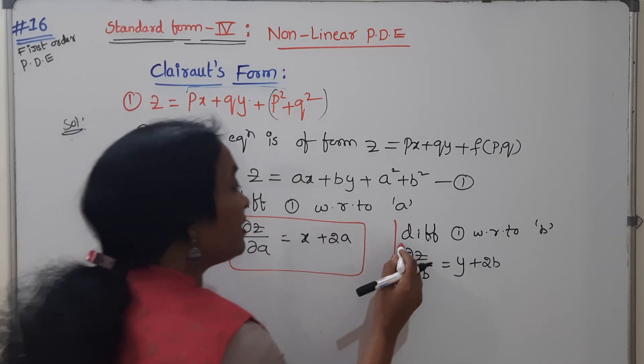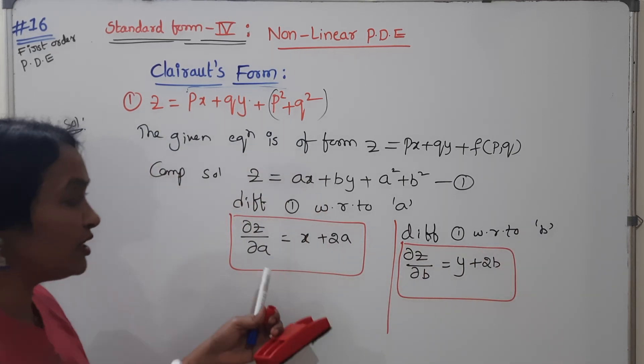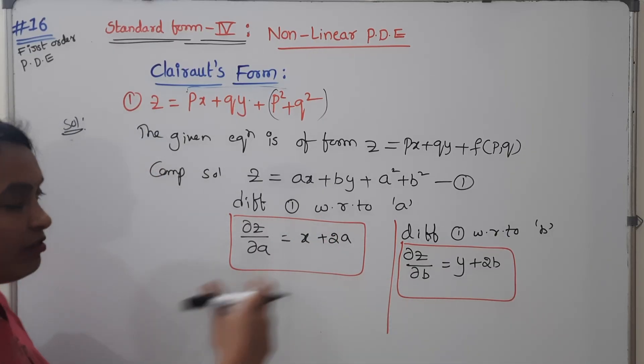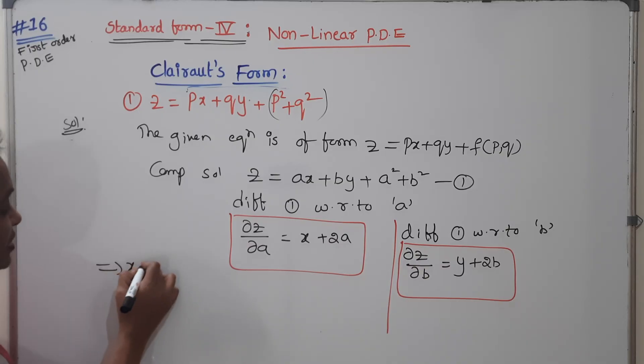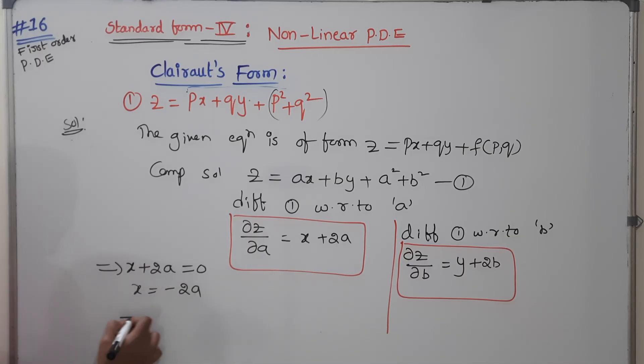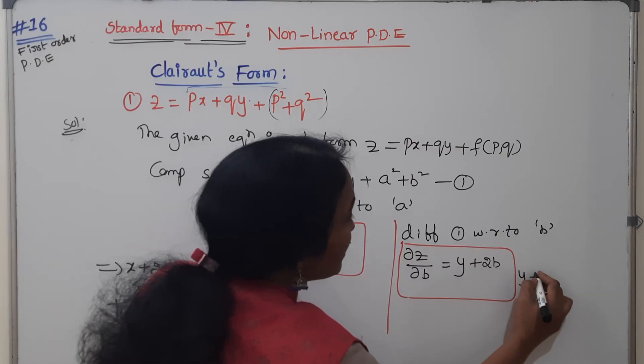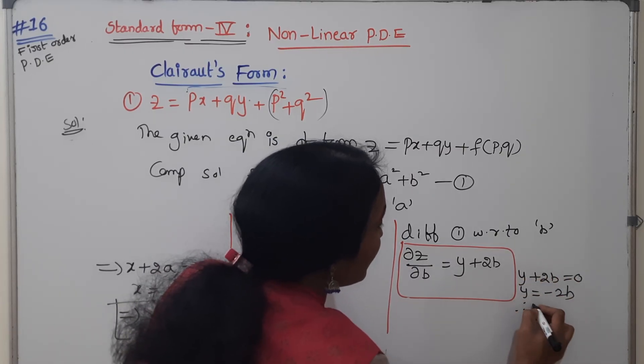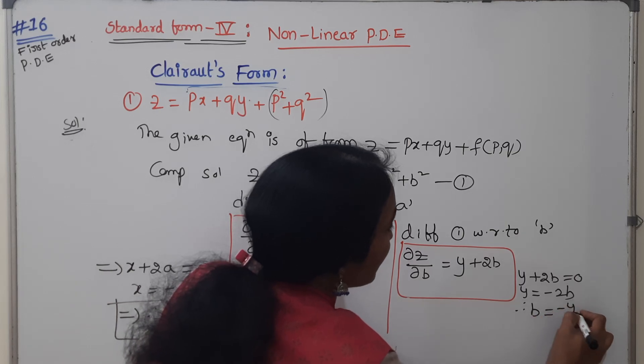After differentiation with respect to A, equate the term equal to zero. Zero equals X plus 2A equals zero. Then X equals minus 2A. From here I want to write A value. Therefore A is equal to minus X by 2. Same like here, Y plus 2B equals zero, so Y equals minus 2B. Then B equals minus Y by 2.